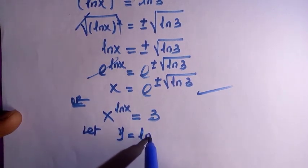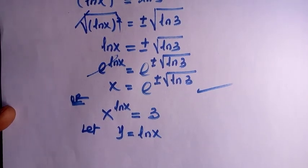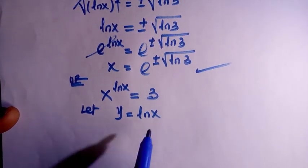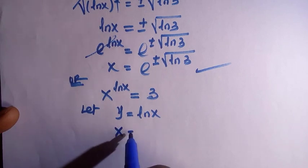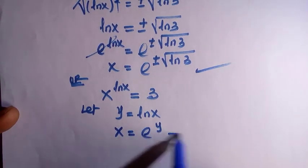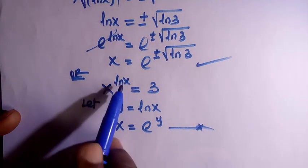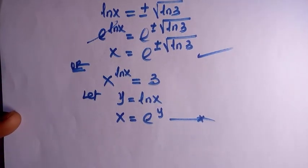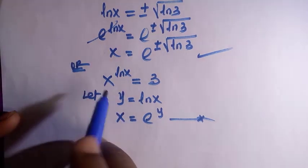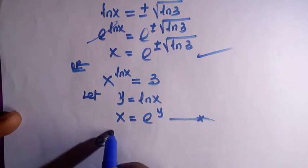By introducing exponential to both sides, I want to make x the subject, so we have e^y. Let's go back to the question. We have x, which is the base, has turned to e^y.